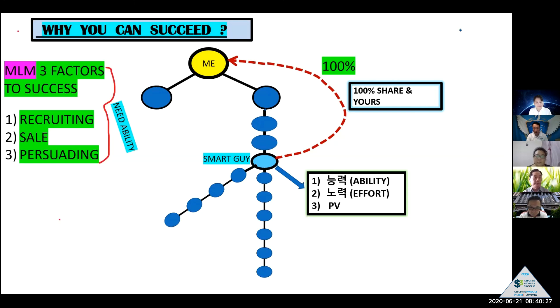Because of three factors to success. Meaning number one: well recruiting and well sale and well speaking, persuading. So if no recruiting, more and more your organization, your business, no downline, build up and build up.